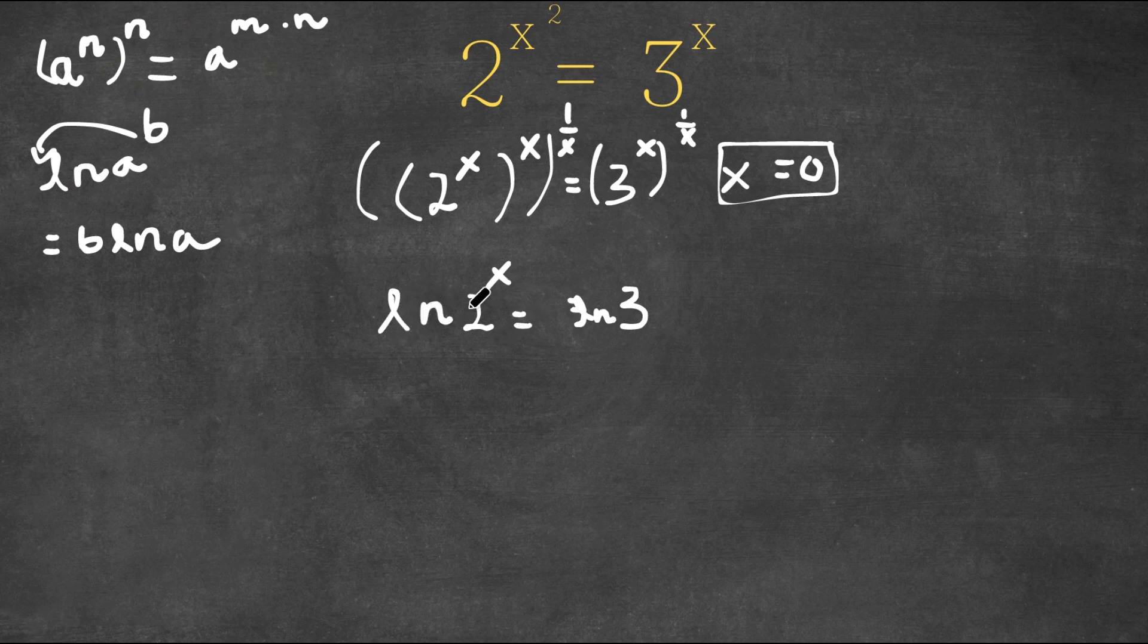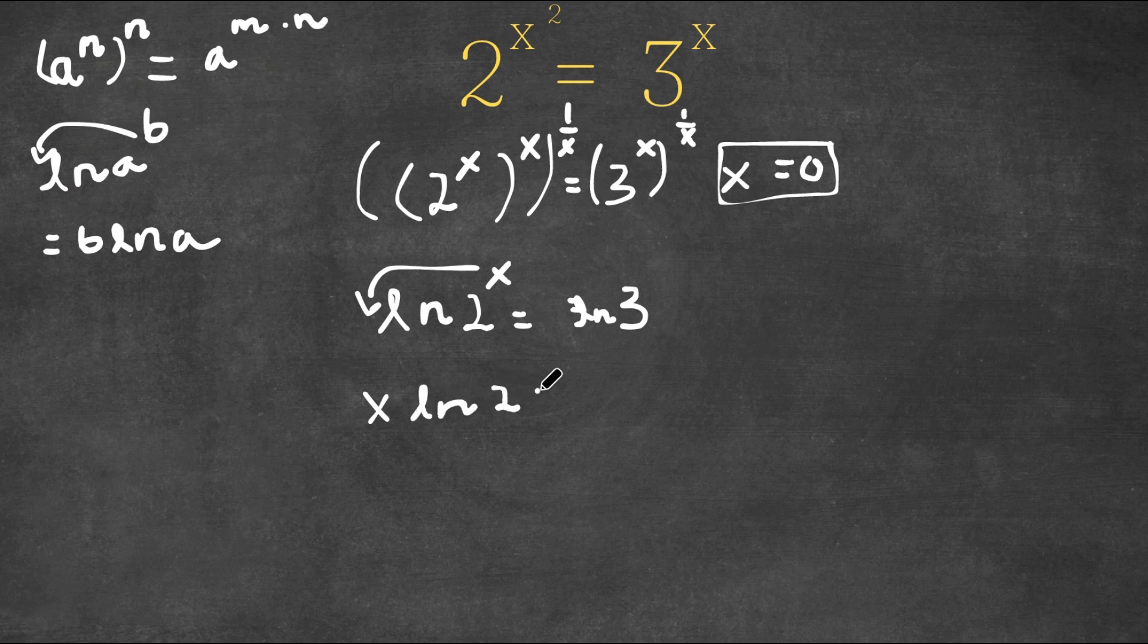So in this case, we have ln 2 to the power of x. And we can think of x as b and 2 as a. So we can actually move this exponent x to the front of the logarithm. So this would be x times ln 2 is equal to ln 3.